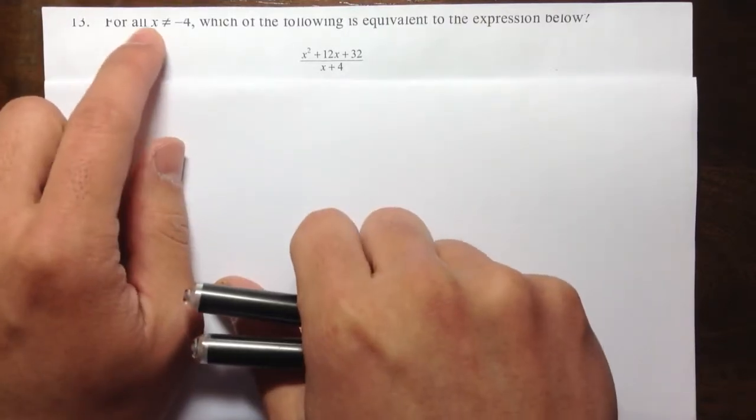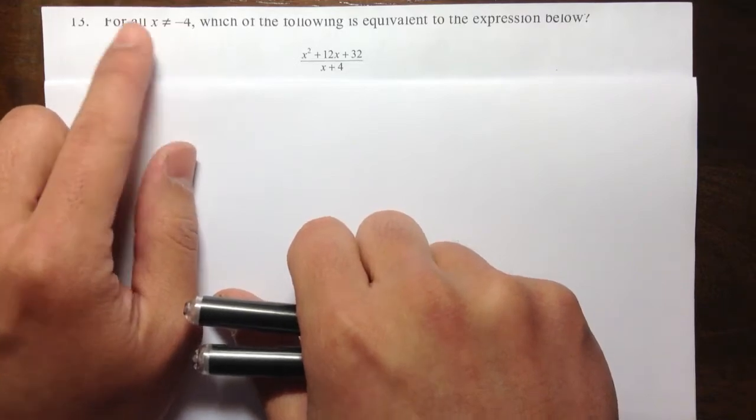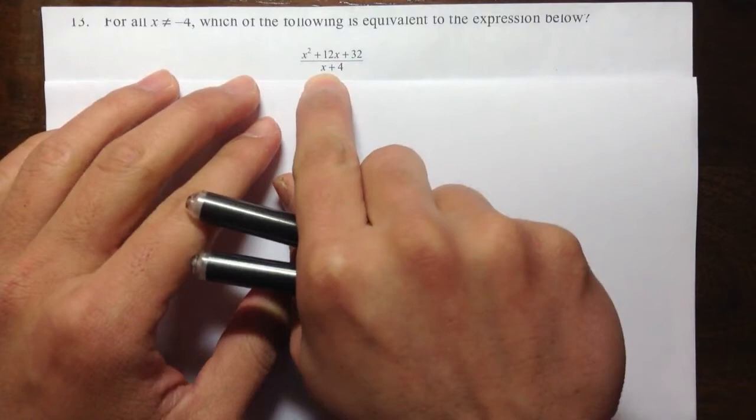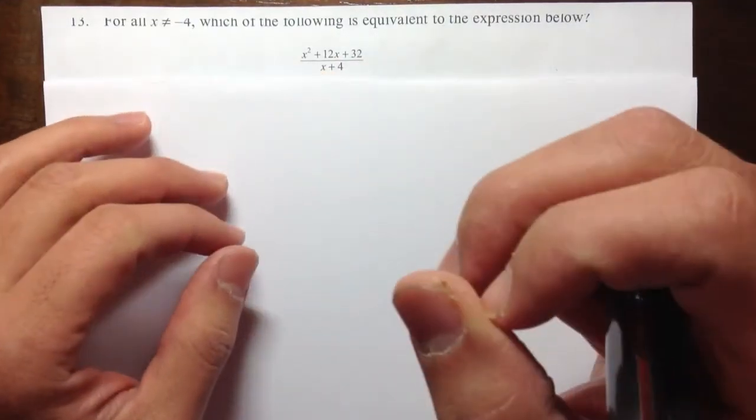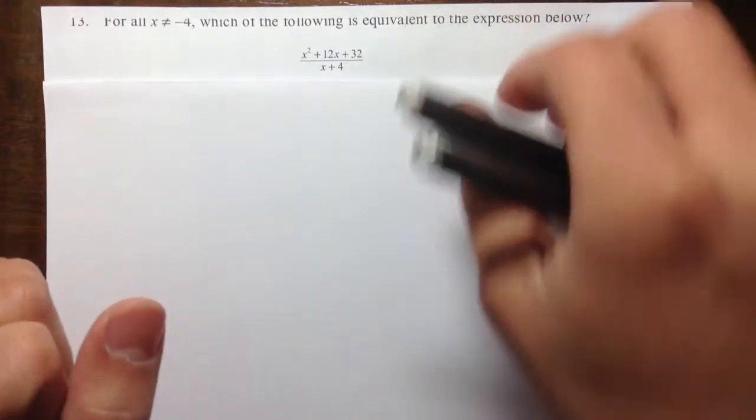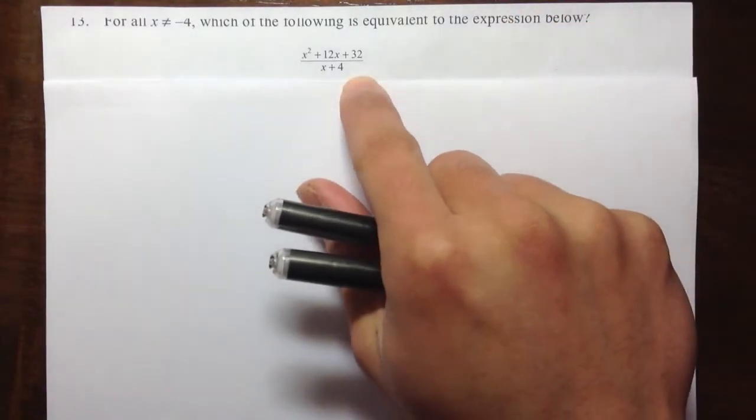The reason that they say x is not equal to negative 4 is because if x was equal to negative 4, then on the bottom you will have negative 4 plus 4, which results as 0. And anything divided by 0 is undefined, so they just want to make sure that this is a legit question.